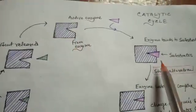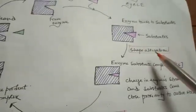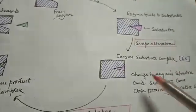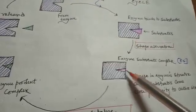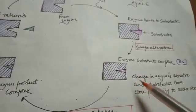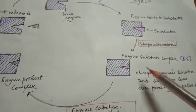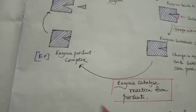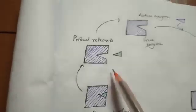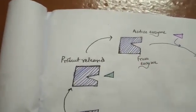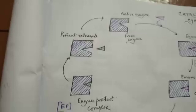Because of the binding of the substrate, there is a change in the enzyme structure and they form the enzyme-substrate complex. From the enzyme-substrate complex, there will be a chemical reaction and the enzyme-product complex will form. Then the product will be released, the enzyme will be free again, and this kind of reaction will follow — completing the catalytic cycle.